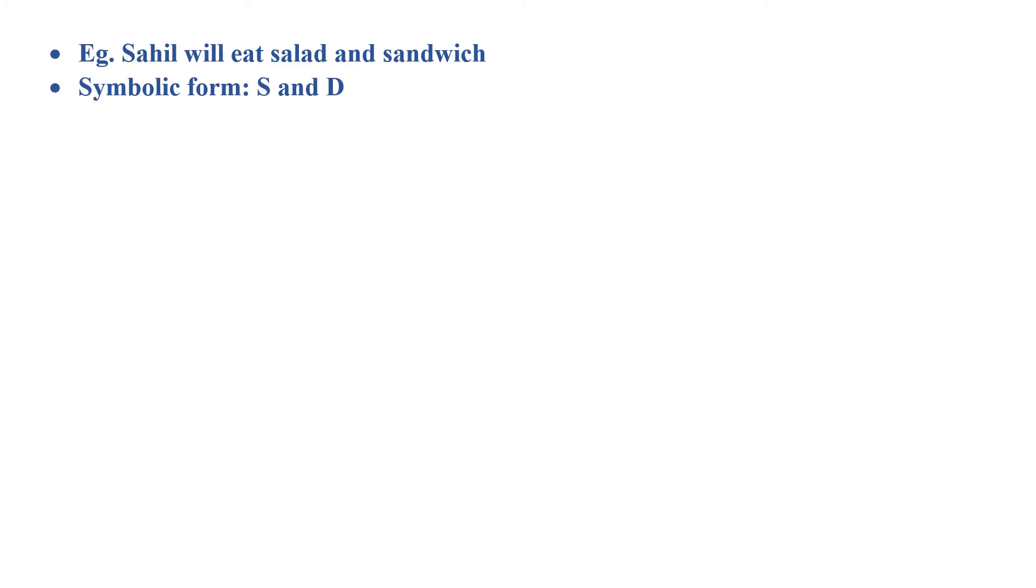Let us take an example. Sahil will eat salad and sandwich. Symbolic form will be capital S and capital D. Here, we are using capital S for Sahil will eat salad. So, we cannot use the same capital S for Sahil will eat sandwich.